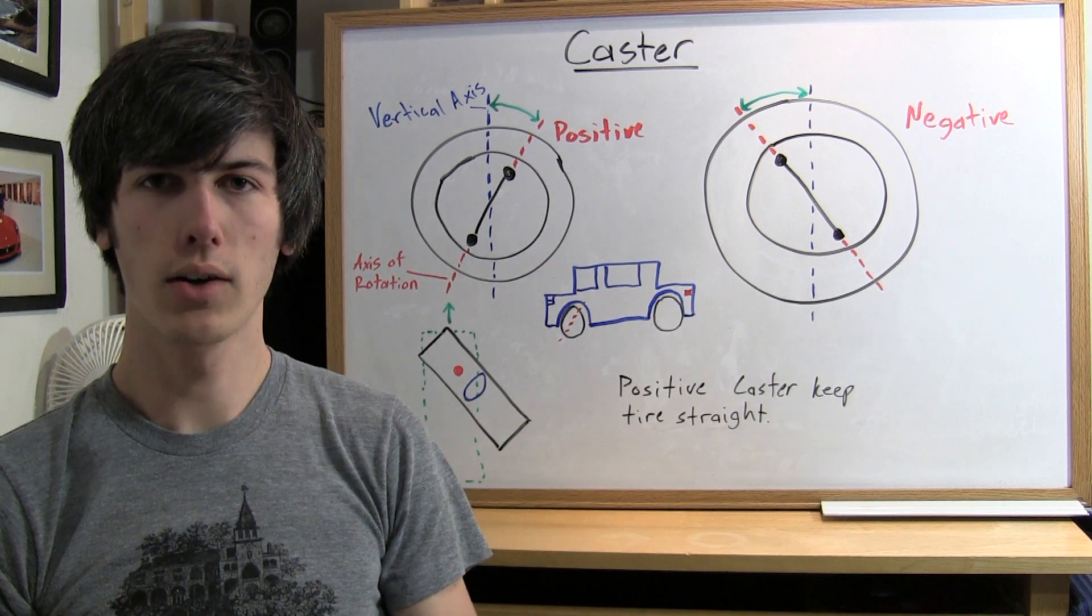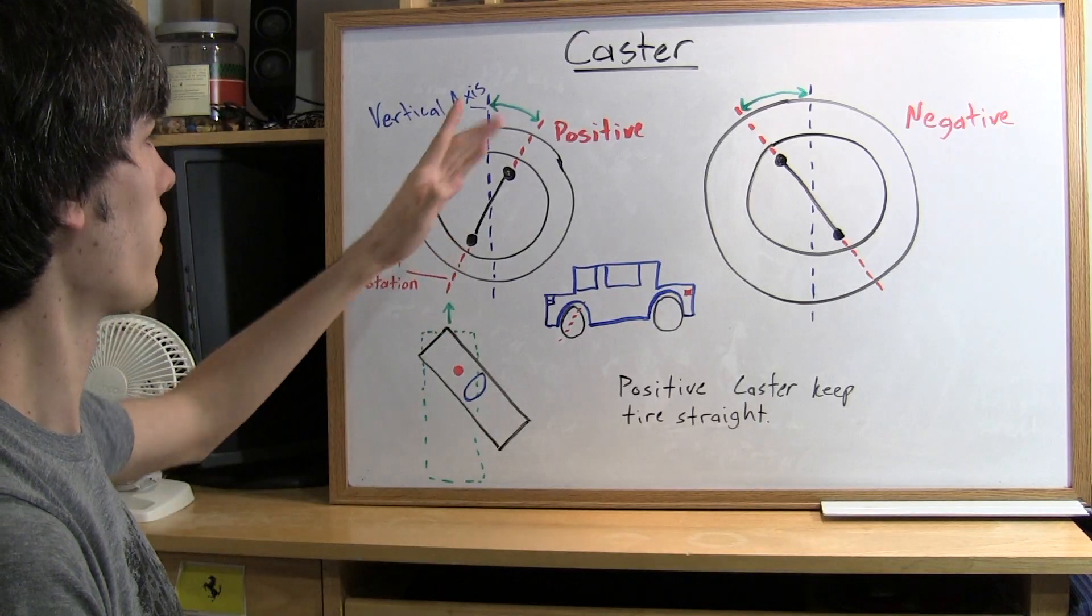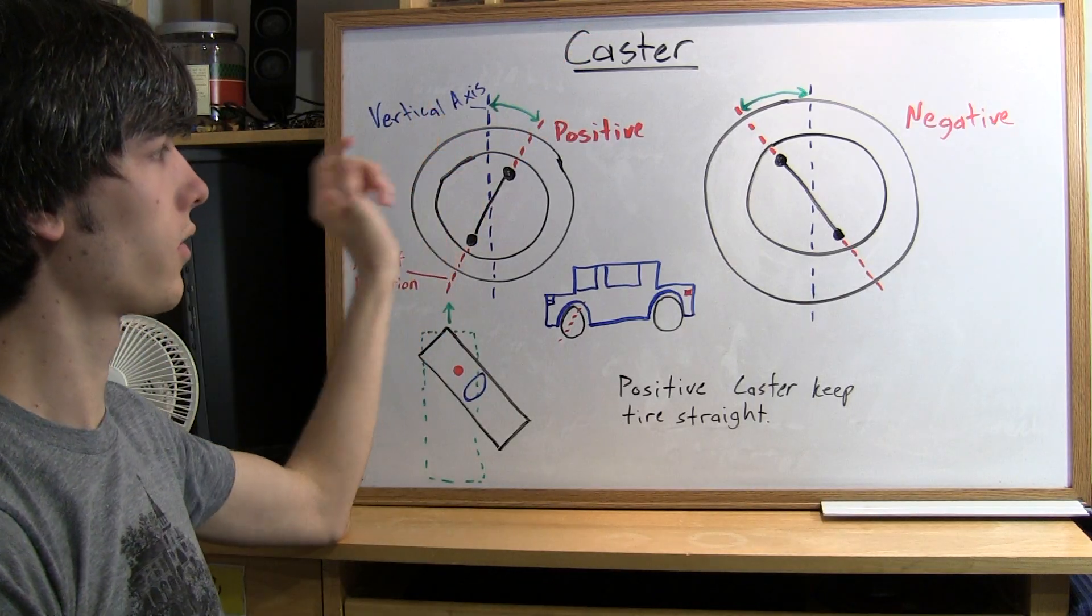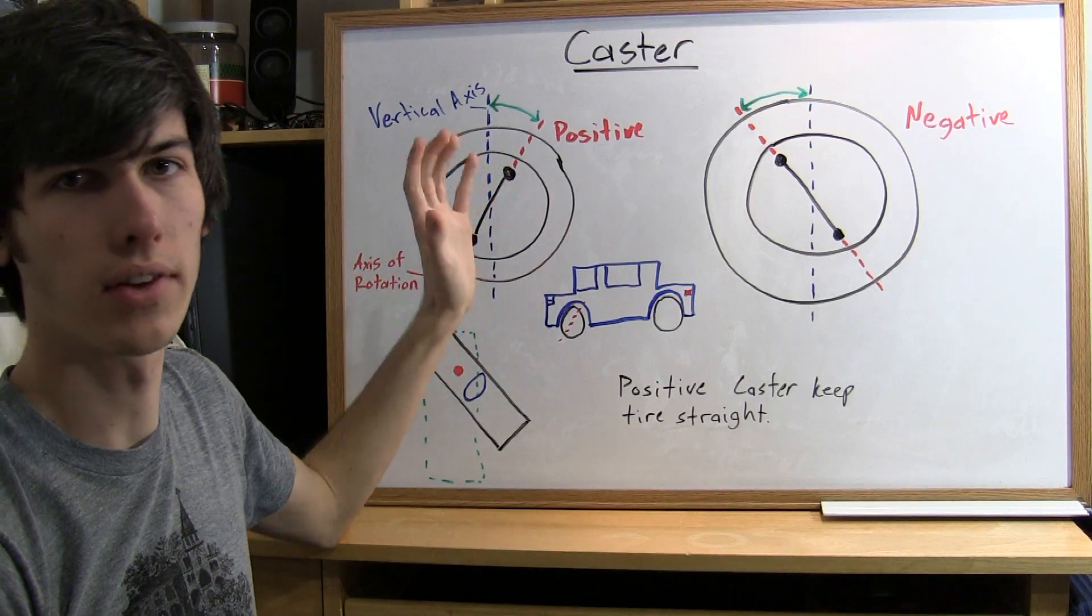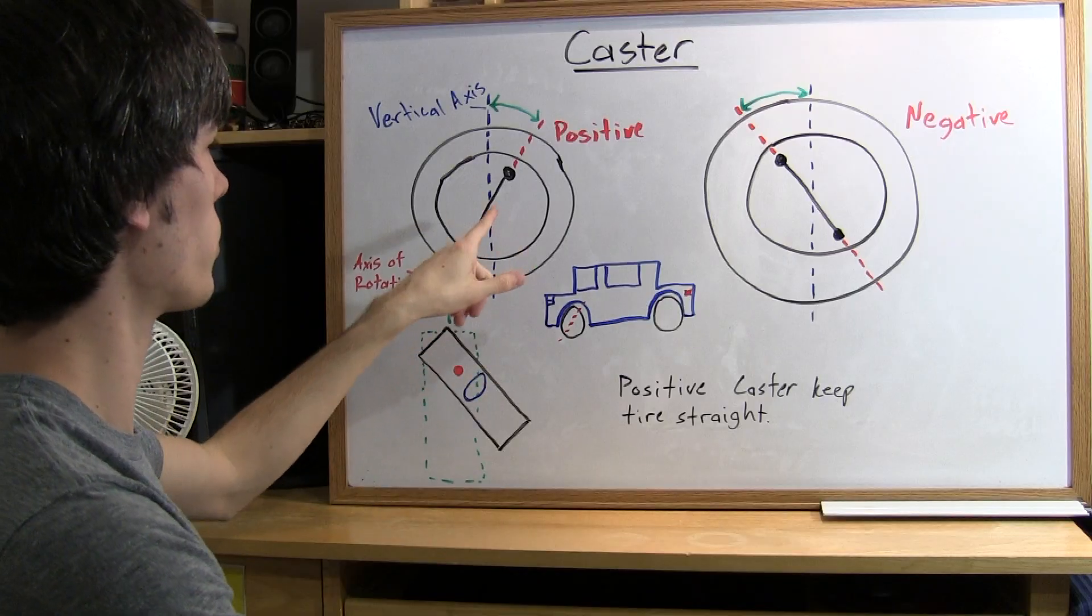Now the final segment on tire alignment has to do with caster. Caster is the angle of the steering axis with respect to the vertical axis when looking at the car from the side. It's another angle at which the tire can be rotating about.